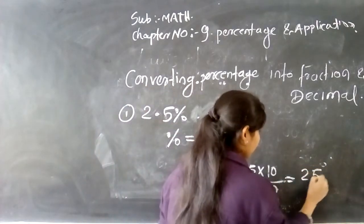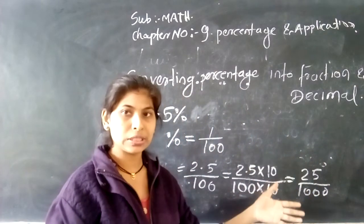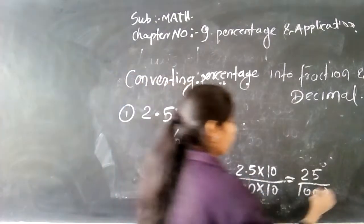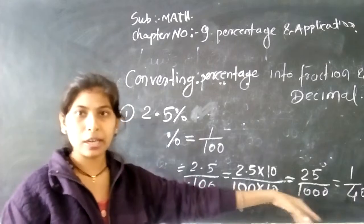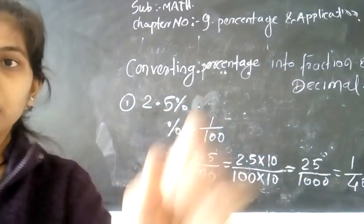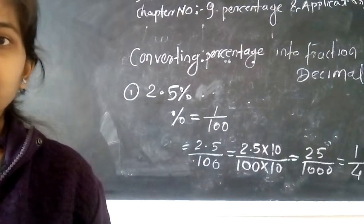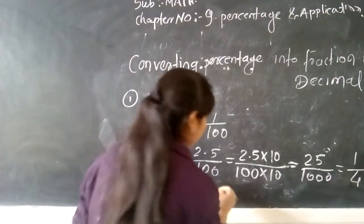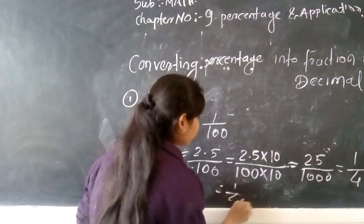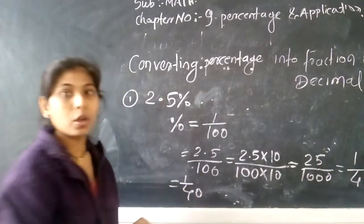हमारा answer आएगा 25 divide by 1000। फिर हम 25 को 1000 से divide करेंगे। हमारा answer कितना आएगा? 1 by 40। यह किसमें आया? यह आया हमारा fraction में। Okay students।